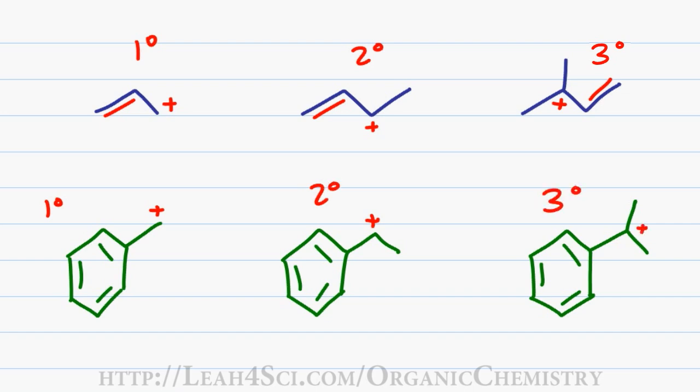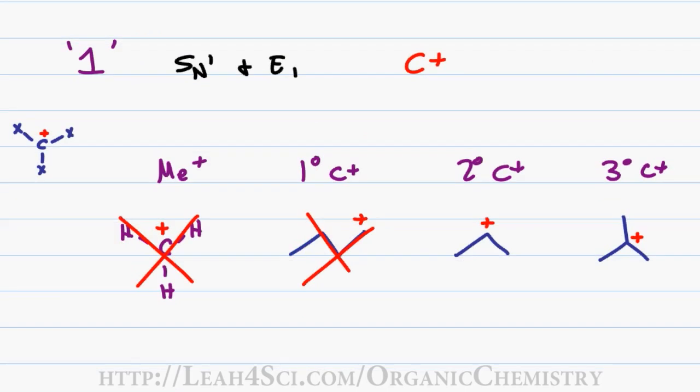Now remember, primary benzylic, even though it's primary, is still a lot more stable than a regular tertiary carbocation because we're not only looking at the primary position but also the fact that the positive charge can go into the ring. Once you identify that your molecule has the ability to support a positive charge, you want to consider the E1 and SN1 reaction. If we have an allylic or benzylic system, you know it's going to have a stable carbocation. If we have a tertiary leaving group, that'll be stable too, and you want to think of the one-type reactions.